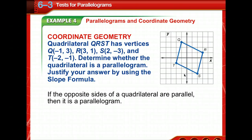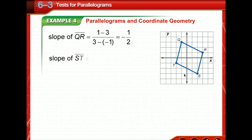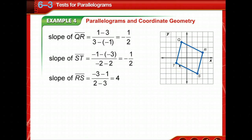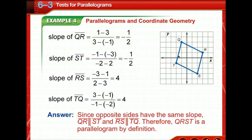If the opposite sides of a quadrilateral are parallel, then it is a parallelogram. We'll know it's parallel if they have the same slope. So QR has the same slope as ST, and RS has the same slope as TQ. Because they have the same slope, we know they're parallel. So we have two sets of parallel lines, and we have a parallelogram by definition.